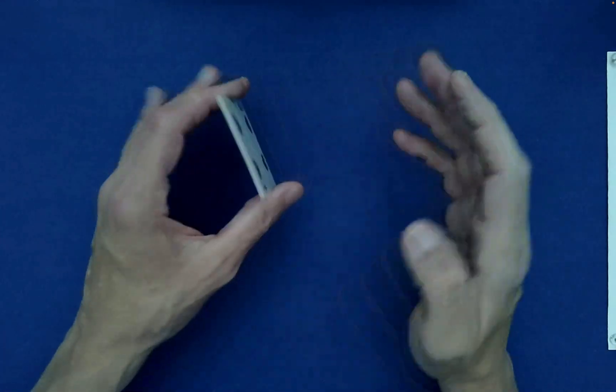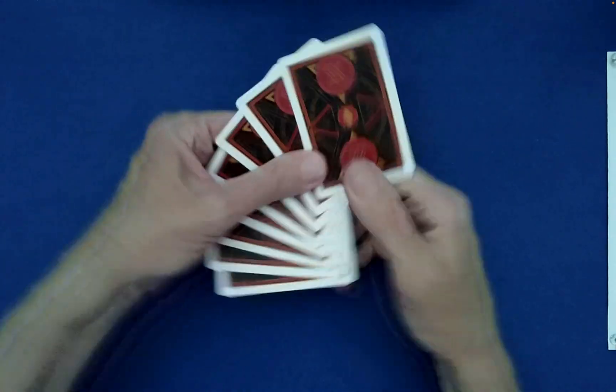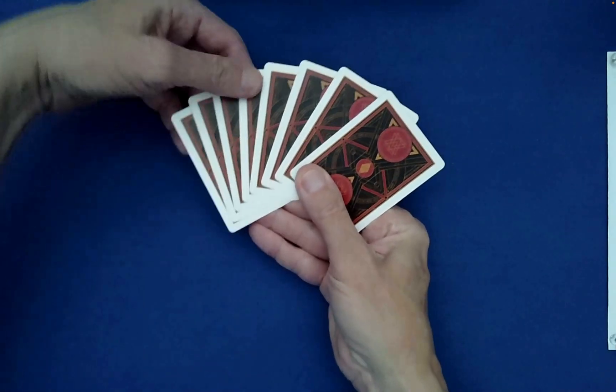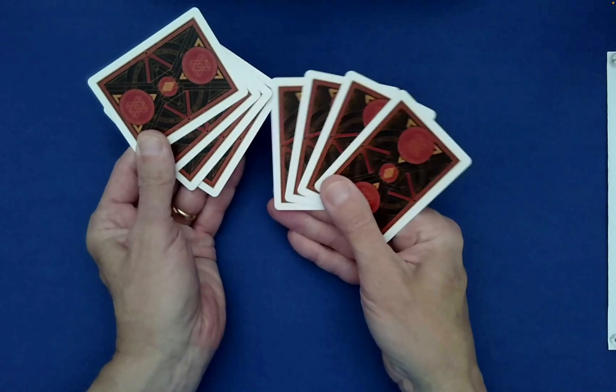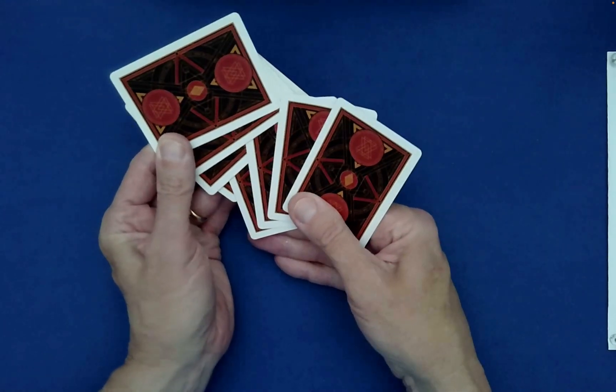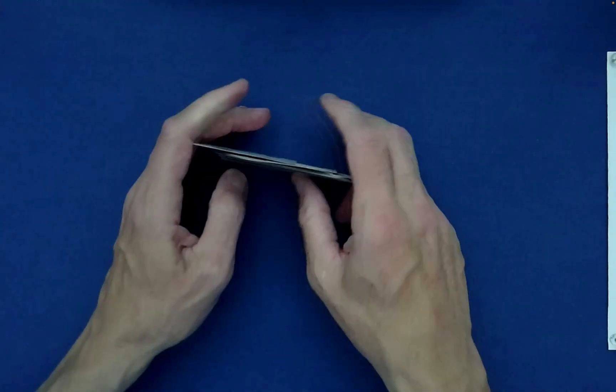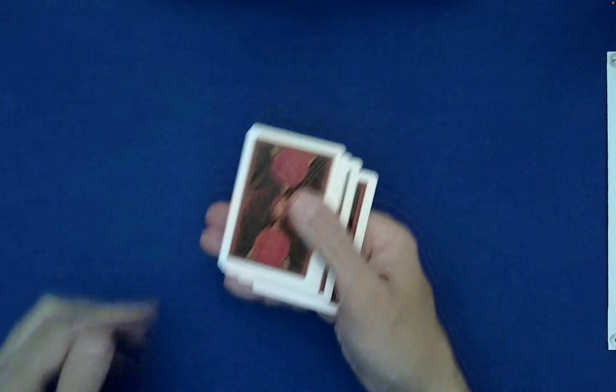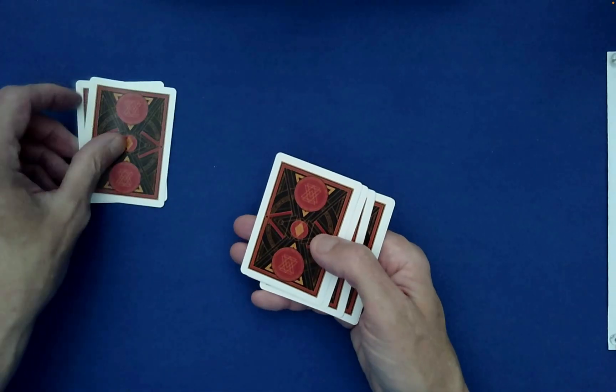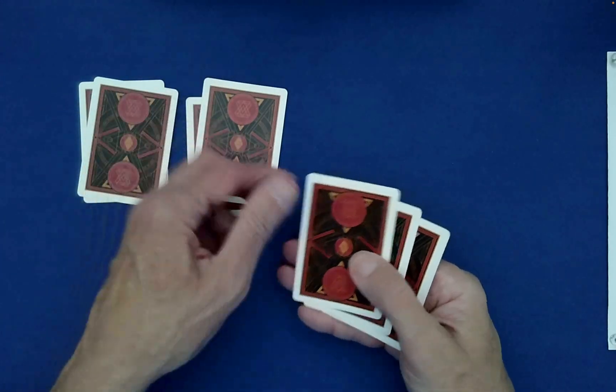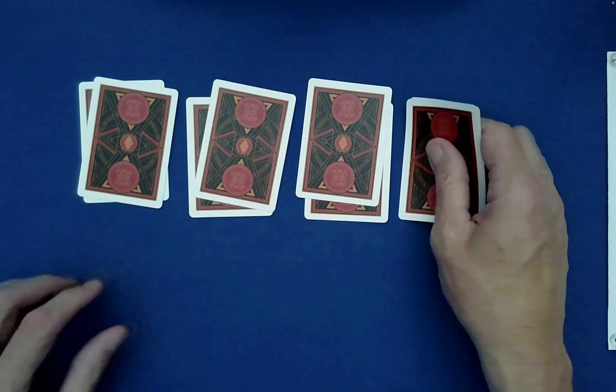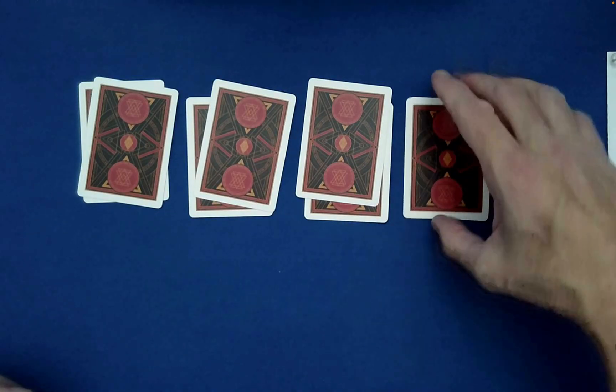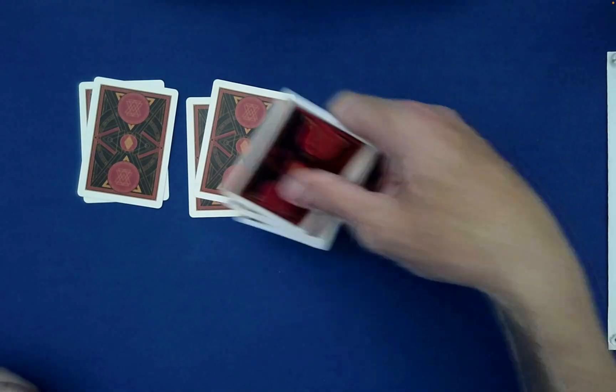We can also do a Faro shuffle. Have you seen this before? So this is where you break the packet exactly in half and then we perfectly interlace them. There's two ways to interlace and either one can be done. We can do something called push off pairs. This is where you just push off pairs of cards to the table. How would you like these stacked? Right to left? Okay, very good.